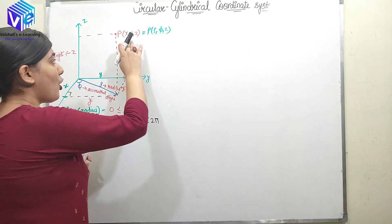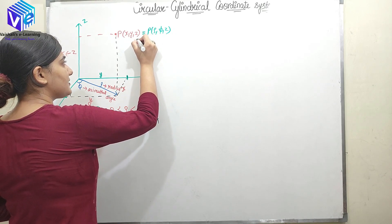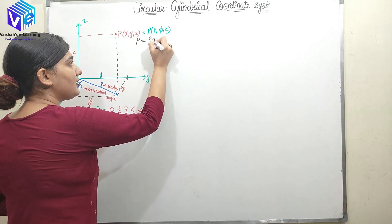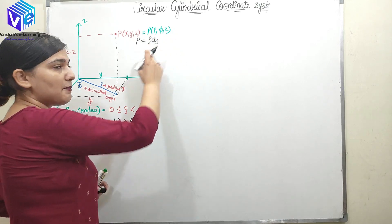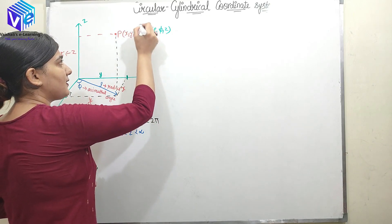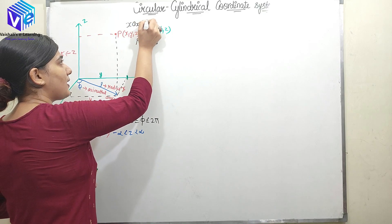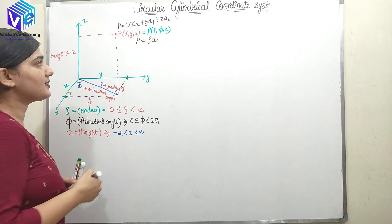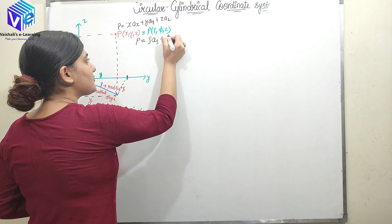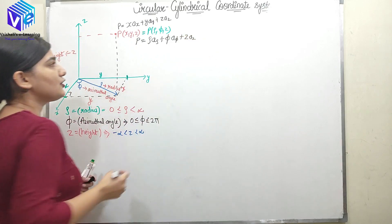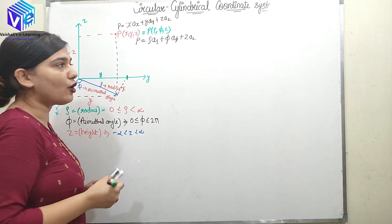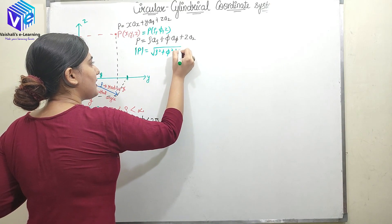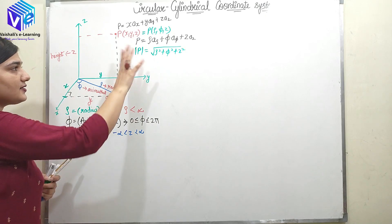If I have to denote any point with the help of a vector in the cylindrical coordinate system, point P is denoted as: rho × a_rho + phi × a_phi + z × a_z. This is similar to how in Cartesian we had x·a_x + y·a_y + z·a_z. The magnitude of point P is given as √(rho² + phi² + z²).